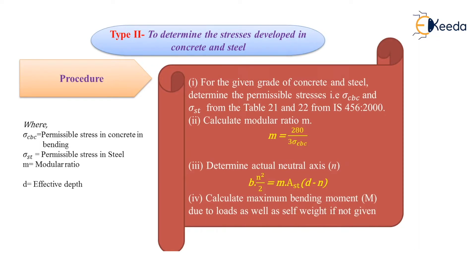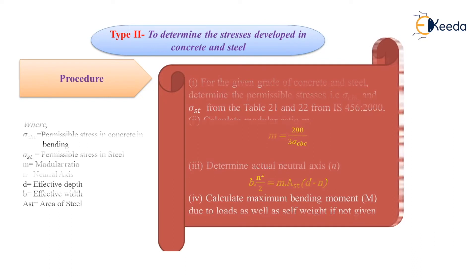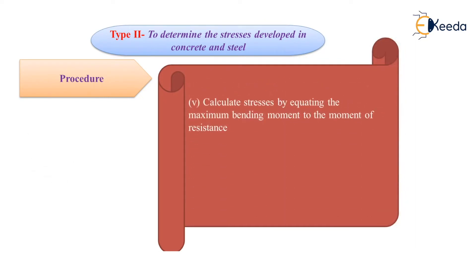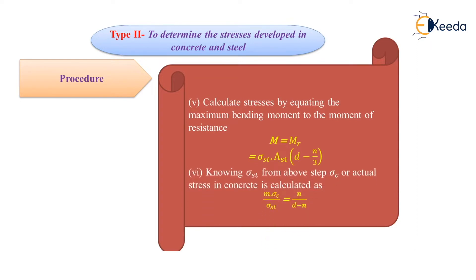Next, we have to calculate maximum bending moment M due to the load. If it is not given in the problem, we have to calculate it. After that, we will calculate Sigma ST, that is stresses developed in steel, by equating maximum bending moment and moment of resistance. From this equation, we will get the value of Sigma ST, and then from that value we will calculate Sigma C, that is stresses developed in concrete.